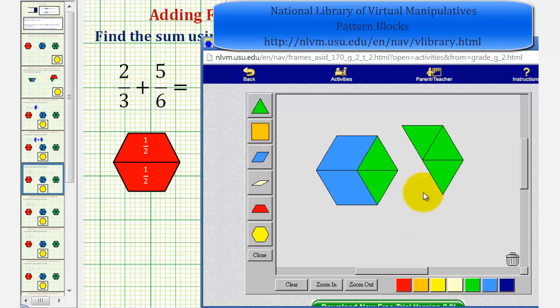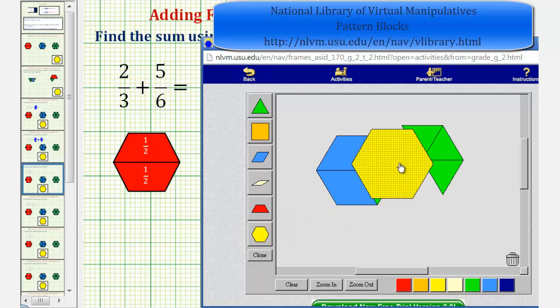Notice if we combine them in this way, we can perform some exchanges here. Notice how these two blue pattern blocks and the two green pattern blocks could be exchanged for one whole.